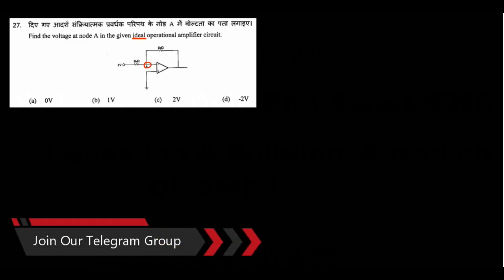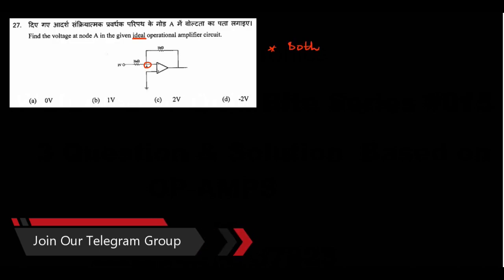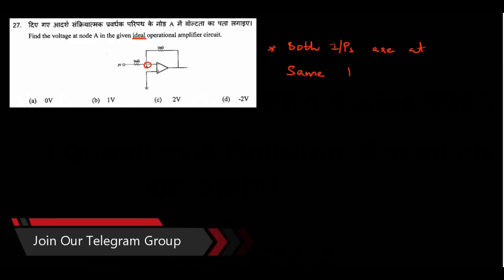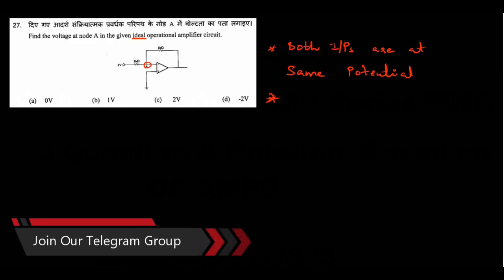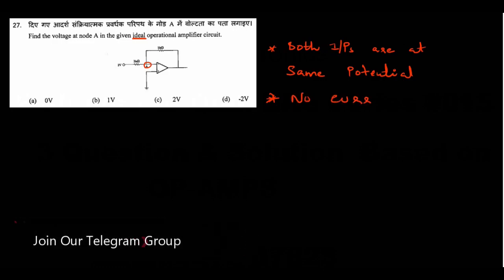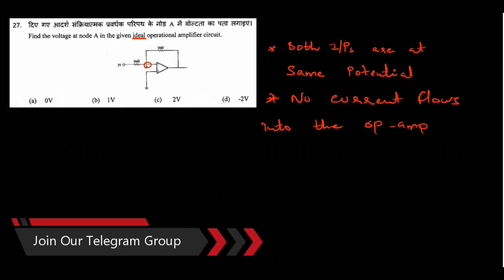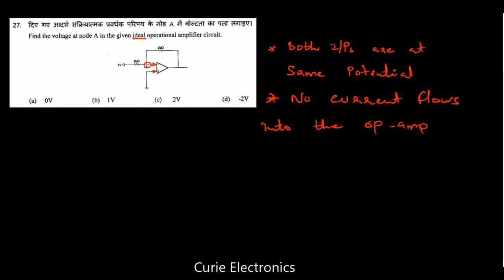In an ideal operational amplifier, there are two points to remember. First, both inputs are at the same potential. Second, no current flows into the op-amp — the current flowing into the op-amp is zero.